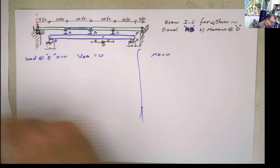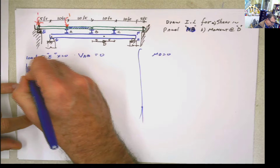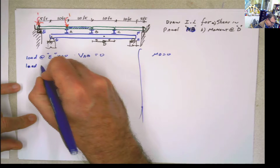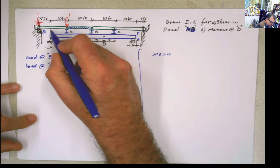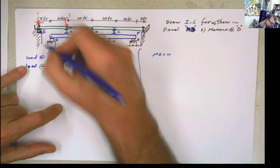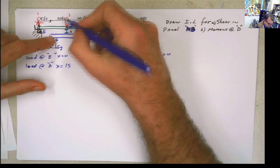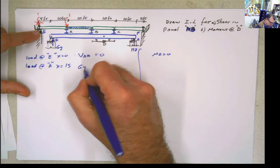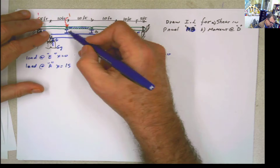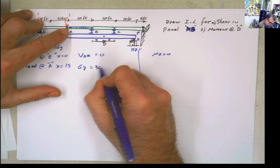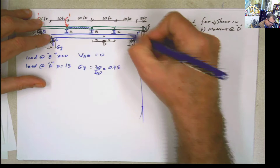Now when the load is at A, or x equal to 15 from the wall, we do the calculations. This is going to be Gy and this is going to be Hy. For a simply supported beam with the load here, the reaction Gy equals 30 divided by the total length of 40, which is 0.75. And Hy is 0.25.